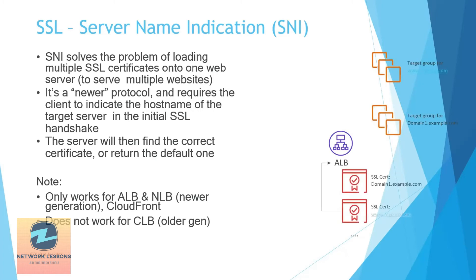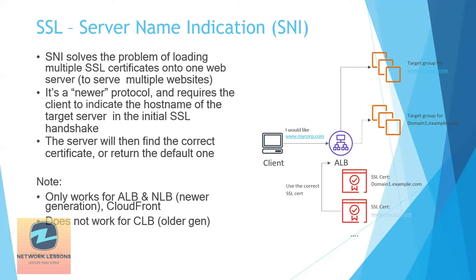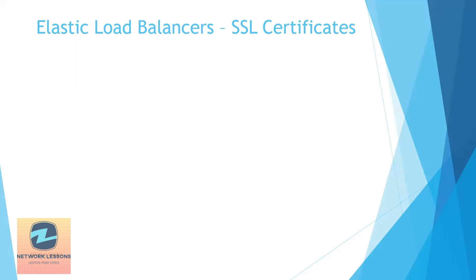To understand the SNI concept: you have an ALB with two target groups and two domains or websites, each with different certificates already loaded into the ALB. When a client comes from outside and requests www.mycorp.com, SNI identifies the correct certificate for mycorp.com and routes the request to the appropriate TG. Likewise, if someone comes with domain1.example.com, it gets the corresponding SSL certificate and is routed to its TG.